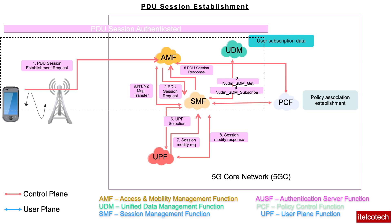After that, the AMF communicates to the gNodeB — the radio access network. The N1/N2 PDU session request, which contains the session management container, is sent to the gNodeB. This N2 request goes from the AMF to the gNodeB, where N1 is the transparent mode connectivity between the AMF and the user equipment.